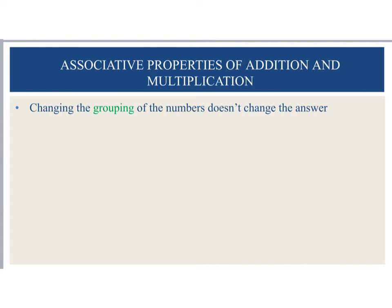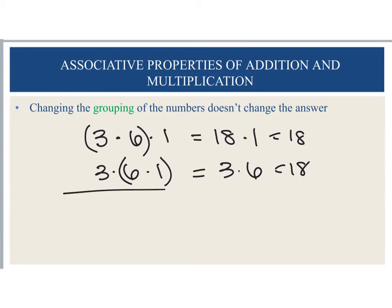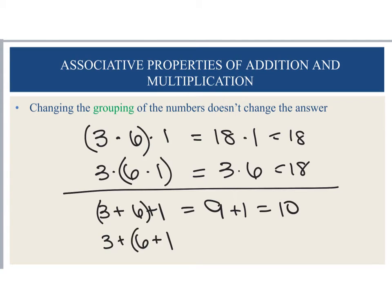Likewise, when we change the grouping of the numbers, it's not going to change our answer either. That's because of the associative property of addition and multiplication. So if I have 3 times 6 times 1, and let's say I want to multiply these two numbers first, that would give me 18, and then I would go times 1. I could also multiply these two together first to give me 3 times 6, and these will both give me 18. If I did that with addition, if I went 3 plus 6 plus 1, I can group the 3 plus 6 to give me 9, and then add my 1 for 10. Or I could group my 6 plus 1 together, which gives me 3 plus 7, and that would also give me 10. So grouping of the numbers does not change for addition and multiplication.